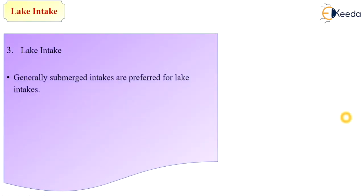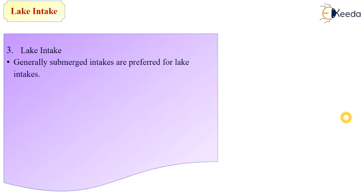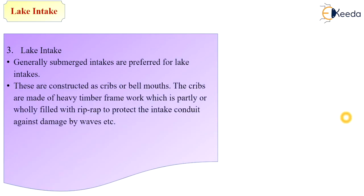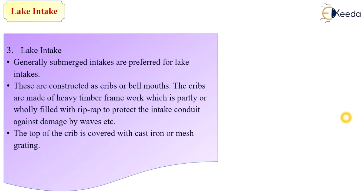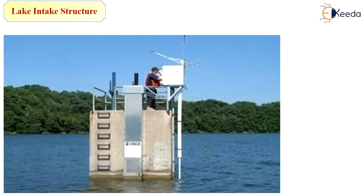Next is lake intake. Generally submerged intakes are preferred for lake intake. These are constructed at a crib or bell mouth. The cribs are made of heavy timber framework partially or wholly filled with rip-rap to protect the intake conduit against damage by waves. The top of the crib is covered with cast iron or mesh grating to avoid entry of silt particles or floating materials. This is the diagram of a lake intake constructed on or near the bank of the lake.